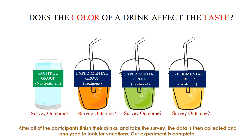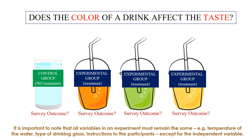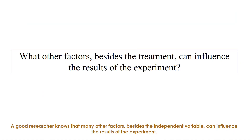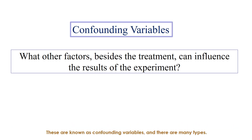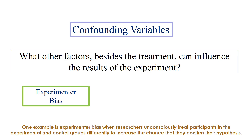It is important to note that all variables in an experiment must remain the same — for example, temperature of the water, type of drinking glass, and instructions to participants — except for the independent variable. A good researcher knows that many other factors besides the independent variable can influence results. These are known as confounding variables, and there are many types. One example is experimenter bias, when researchers unconsciously treat participants in the experimental and control groups differently to increase the chance of confirming their hypothesis.